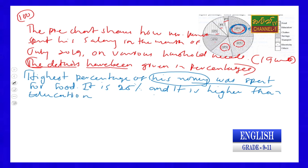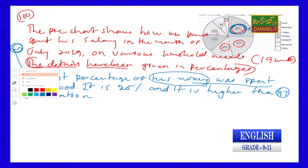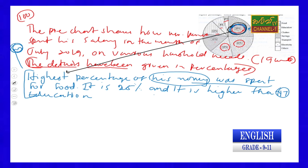I have provided the sentence for highest percentage: 'Highest percentage of his money was spent for food. It is 25%, and it is higher than education.' That covers the 'highest' and 'more than' comparison. Now for lowest percentage — that is the opposite, a very minimum item. Lowest percentage of money was given for others, which is 3 percentage, and it is lower than electricity.